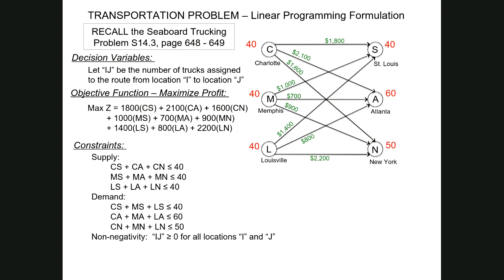This is our seaboard trucking problem. The structure has our origin and destination locations — six of those. Trucks can go from each of the three origins to each of the three destinations, giving us nine different decision variables, shown by the corresponding arrows. We formulated the objective function with nine different terms as a maximization problem, and each of our locations had a constraint associated with it. That was the structure of our transportation problem.